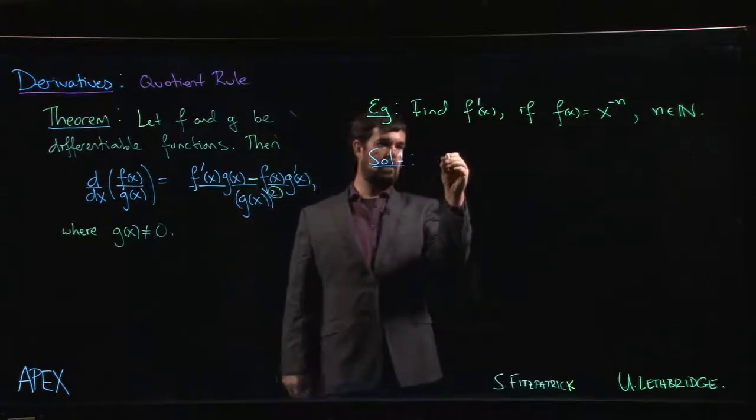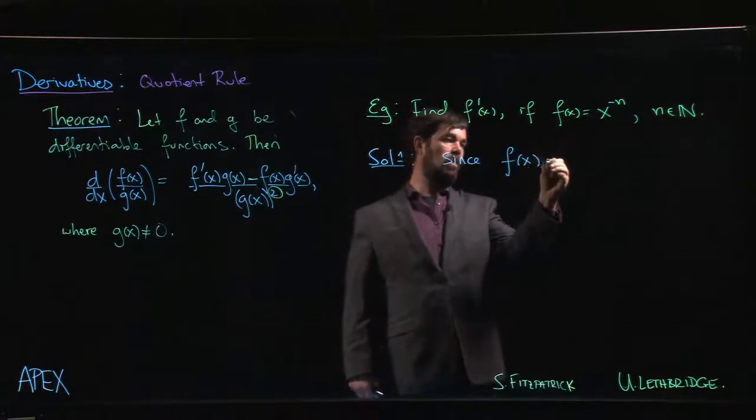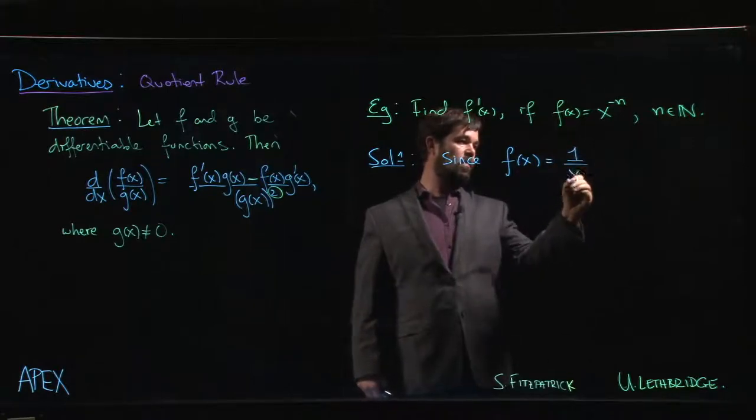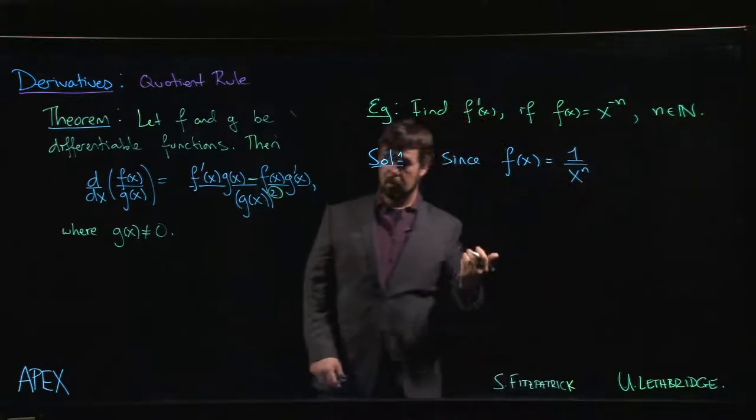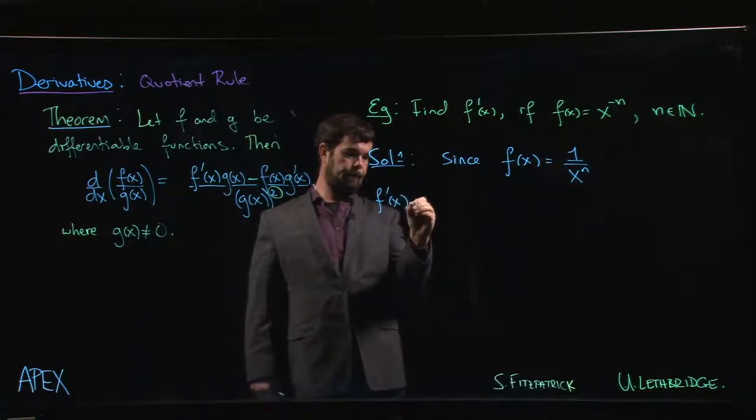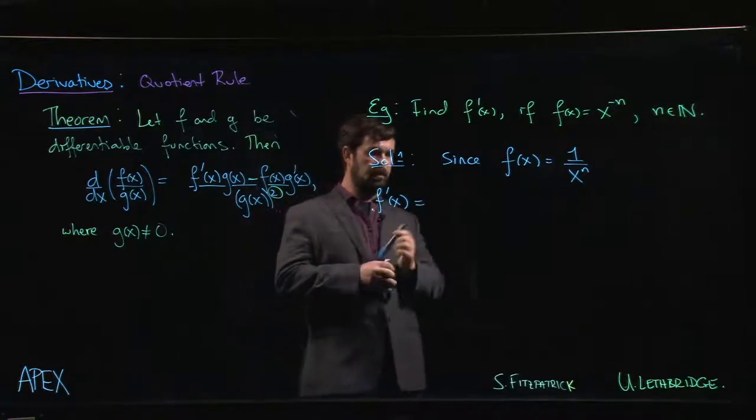...is that using laws of exponents, we can write f(x) as 1 over x to the n. The quotient rule applies. f prime, it's going to be, well, the derivative of the top...